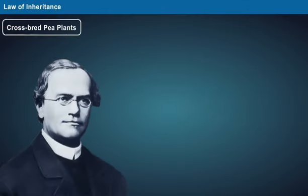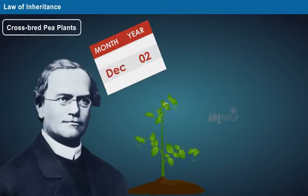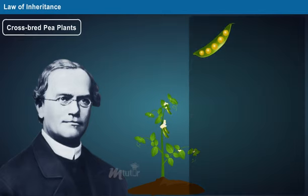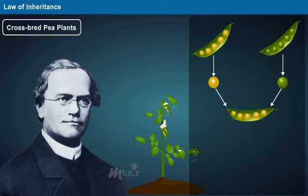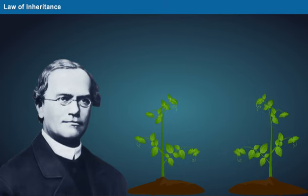Mendel selectively crossbred pea plants over generations and discovered that certain characteristic traits appear in the offspring without any blending of parent characteristics. To explain this concept, Mendel crossbred two different pea plants, that is, one bearing white flowers and the other bearing purple flowers.